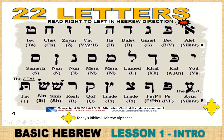Zayin is Z. Chet has a guttural sound, like Bach — CH, closed H. Tet is T or TE. Yod is the tenth letter — Y, or sometimes IY. Kaph, when there is a dot in the middle, is K; without the dot it is KH. Kaph at the end of the word is the final or soft form.